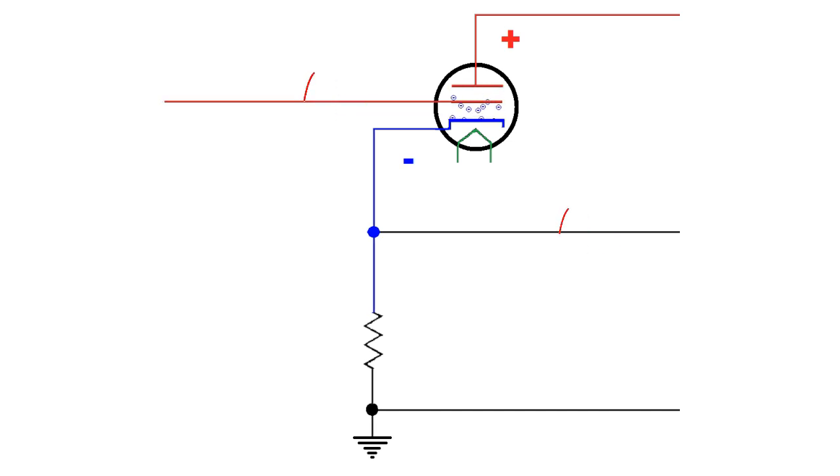Now since the cathode is highly negative, taking the output voltage from the cathode resistor will now oppose the signal voltage. So as the signal goes negative, the output will also go negative. And likewise, as the signal goes positive, the output will also go positive.